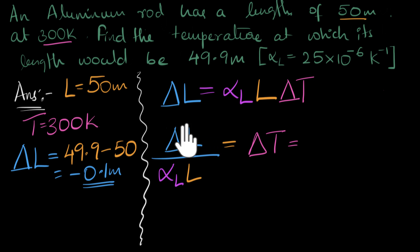And now we can just substitute. Delta L is 0.1. You can substitute minus 0.1. We can do that. No problem. Minus 0.1 meters divided by, alpha L is just 25, 25 times 10 to the minus 6 Kelvin inverse times L, and L is 50.